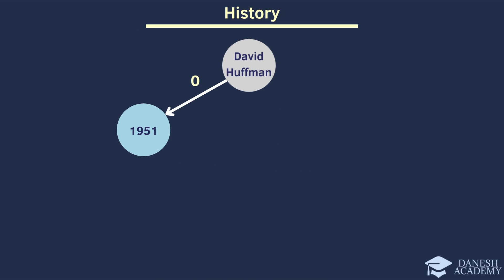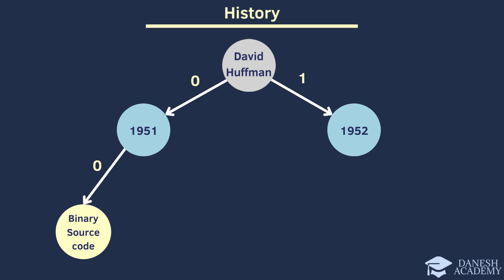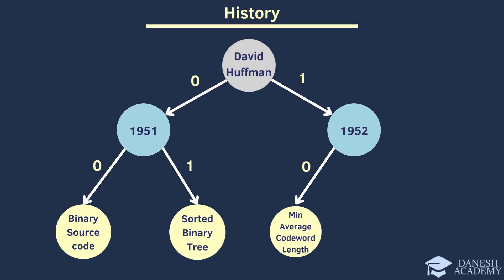Back in 1951, David Huffman took on a challenge of making binary source codes more efficient. He came up with something elegant called Huffman coding in 1952. Basically, he sorted things out using a binary tree based on probability. So, what's the genius move? Giving shorter codes to the stuff that pops up the most. That way, when you decode it, there's no confusion, no extra bits to deal with.